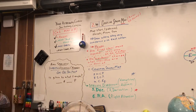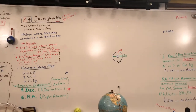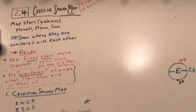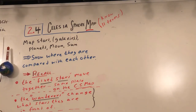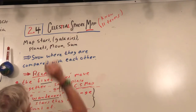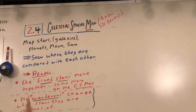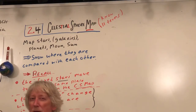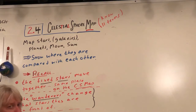We're going to map these stars. This is called the celestial sphere map — or celestial map — and there are 11 ideas and terms you need to know. We're mapping stars, galaxies (in parentheses, because we only learned about galaxies 100 years ago), and now also planets, moon, and sun. We're going to show where they are compared to each other, which was huge — that changed the game about 400-500 years ago.